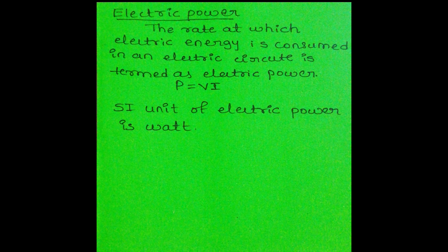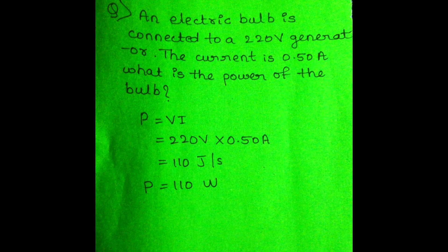Let's move on to our last topic: electric power. Electric power is defined as the rate at which electric energy is consumed in an electric circuit, and it is given by P equal to V into I. The SI unit of electric power is Watt. In this example, the voltage given is 220 volt and current is 0.50 ampere. We know P equal to V into I. On multiplying these two factors, we get electric power P equal to 110 Watt.